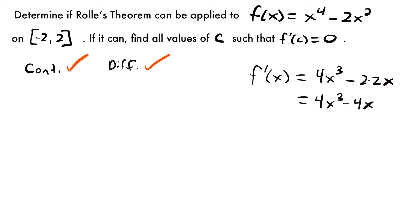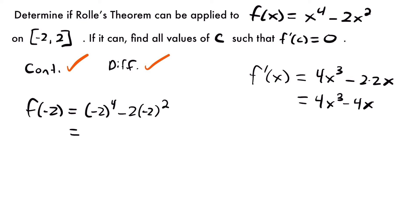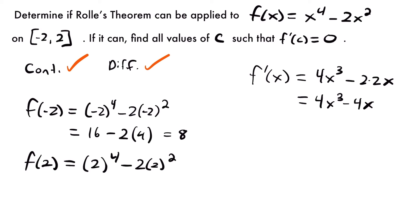Now we check our endpoints. Rolle's Theorem is not going to apply if negative 2 and 2 are not at the same height for this function. f of negative 2 equals negative 2 to the 4th minus 2 times negative 2 squared, which equals 16 minus 2 times 4, which equals 16 minus 8, which equals 8. Plugging in positive 2 gives the same result: 2 to the 4th minus 2 times 2 squared equals 16 minus 8, which equals 8. So our endpoints are at the same height — the same y value.